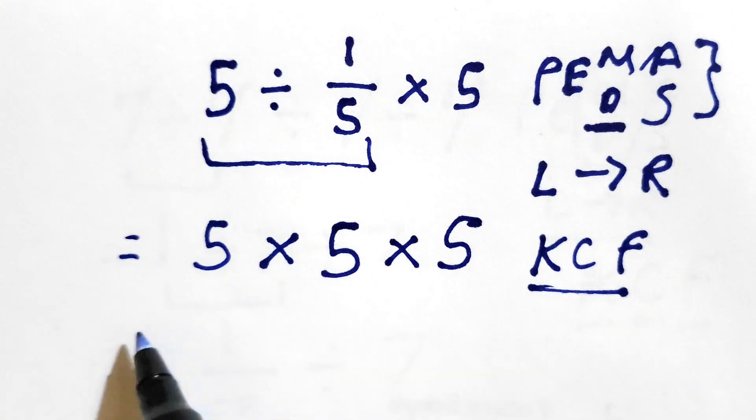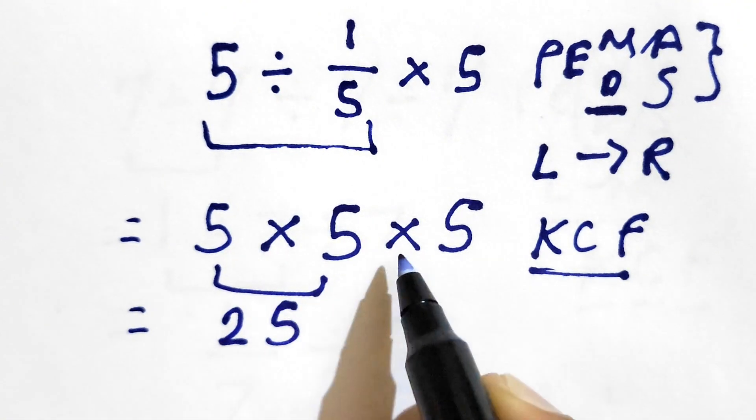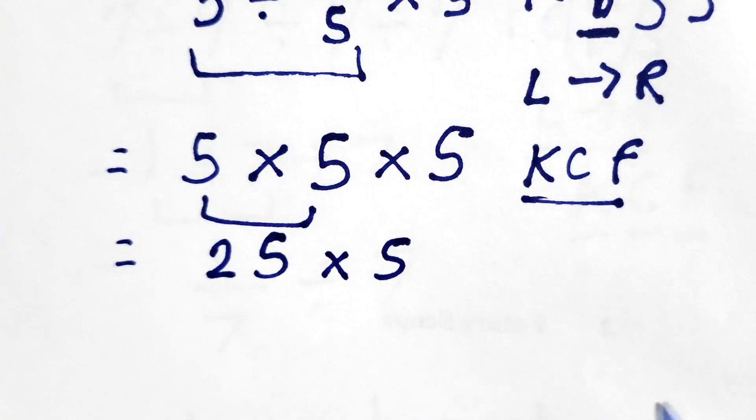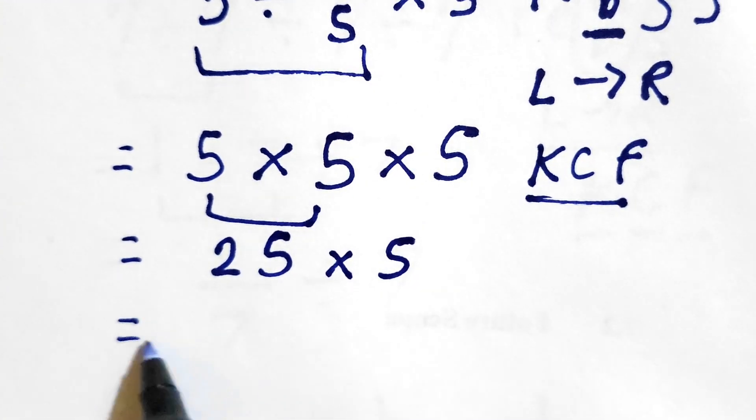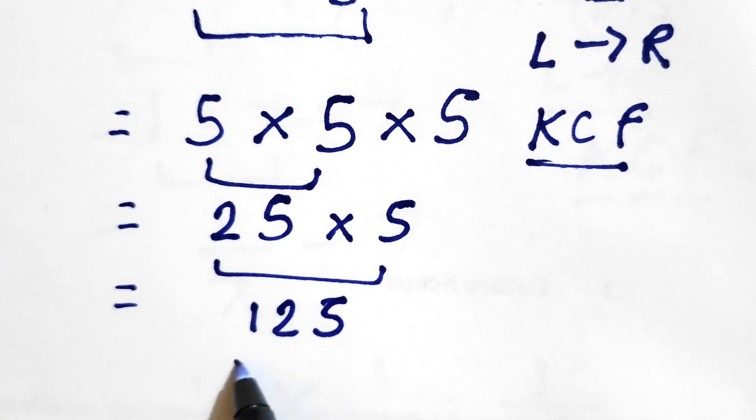5 times 5 gives us 25, and we are left with this 5. So we have 25 times 5, that gives us 125. So this is the final correct answer.